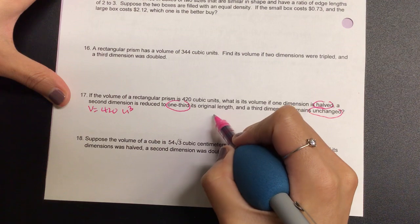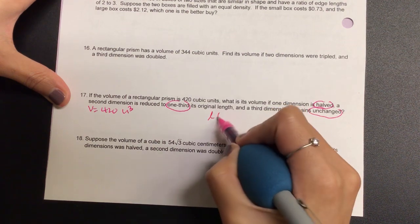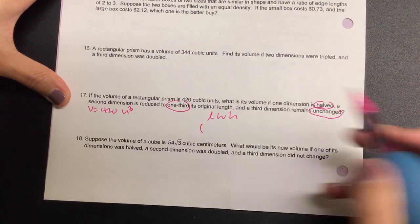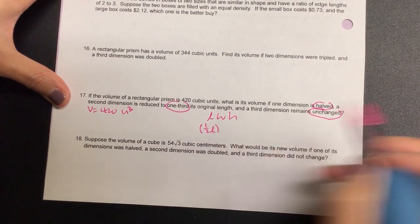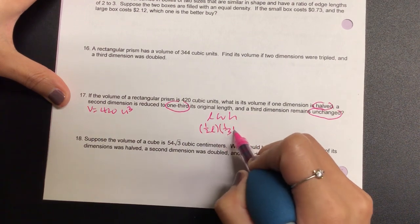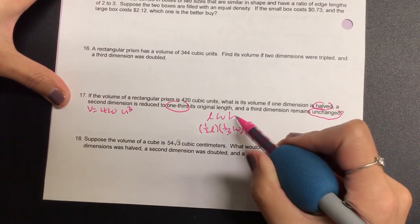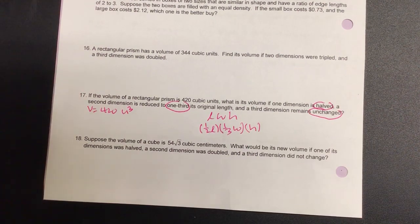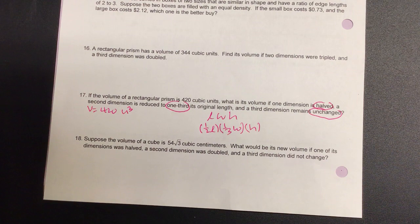So let's write the formula. We have length, width, and height. I'm gonna change all of that. One dimension has been halved, so if I take half of the length, and then the width has been one-third, right, one-third of the width.